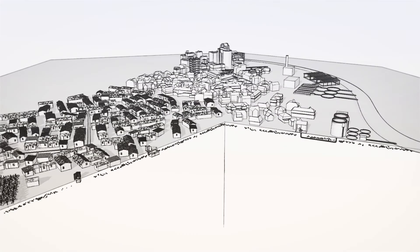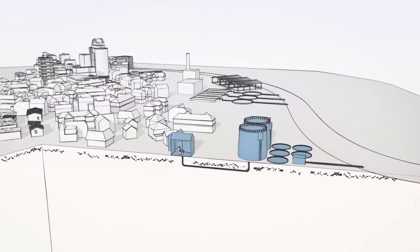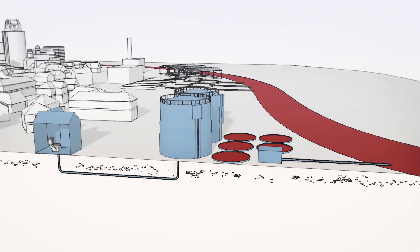Here you can see an example city. Excreta is managed with off-site and on-site sanitation, and the SFD starts out by separating those two sanitation options. This picture shows a typical wastewater treatment plant. Ideally, wastewater is delivered to treatment. If not delivered or not treated, we refer to it as excreta unsafely managed, as shown here in red.